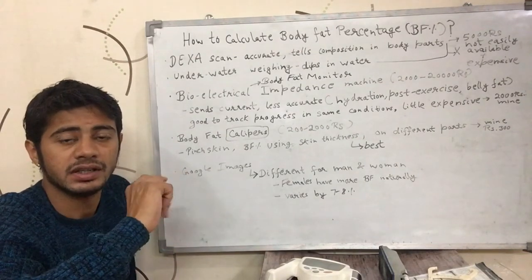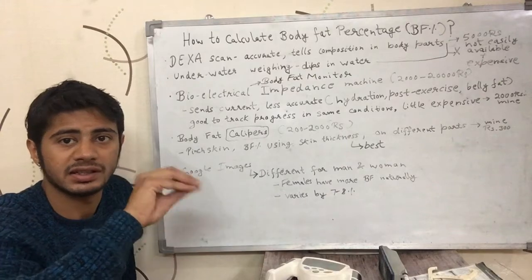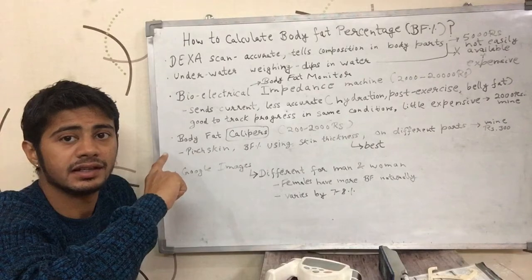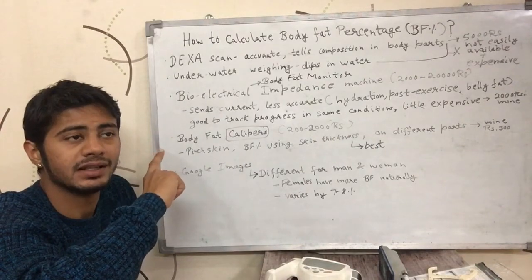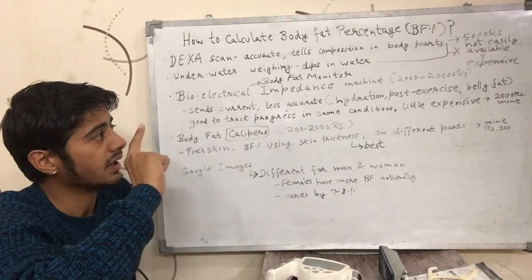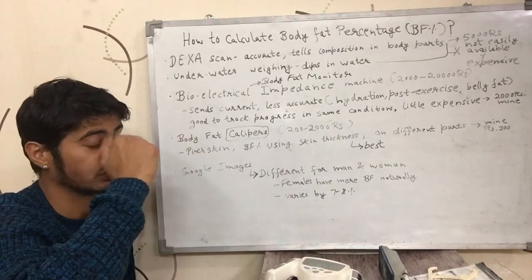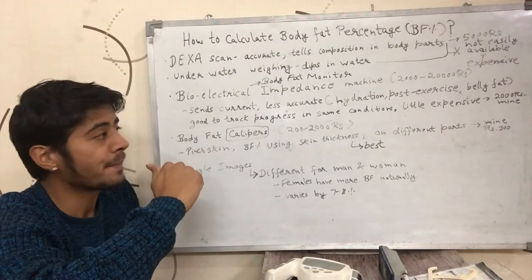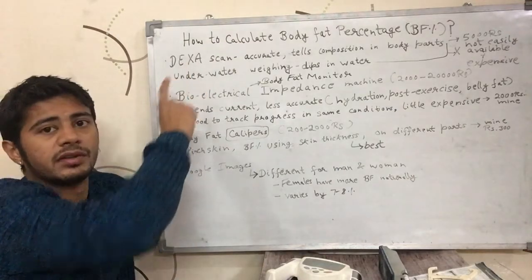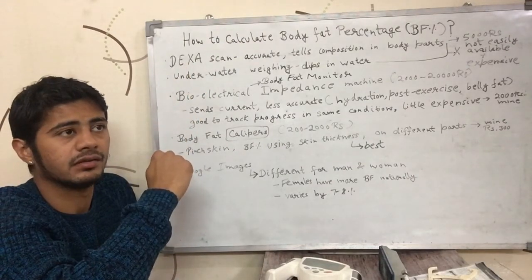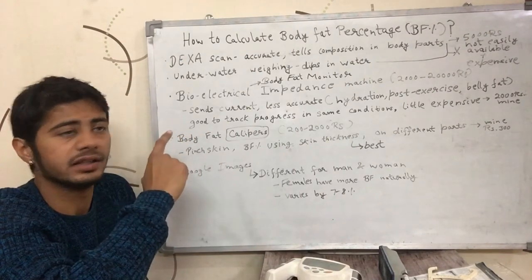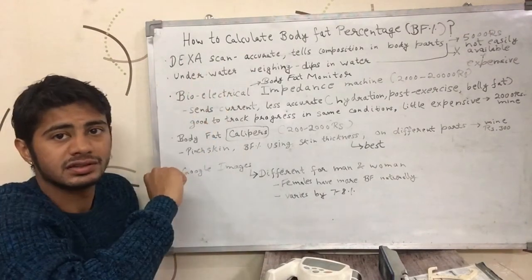It tells you which body part has how much muscle and how much fat. But the main problem is that it might not be available in every city or village, and second, it is very expensive — it might cost you five thousand or ten thousand rupees. So basically it is not easily approachable for common people. If you are wealthy and live in a big city, then you might use this method.